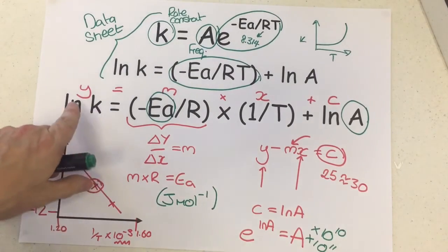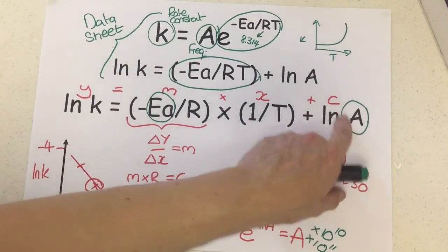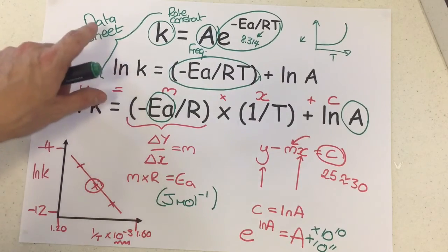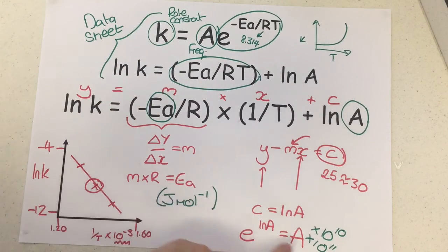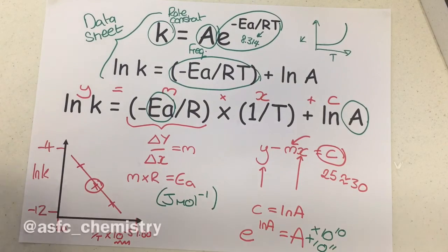Hopefully that shows you what you can do from this slightly adjusted version of the Arrhenius equation that you're going to get in the exam on the datasheet to calculate the activation energy and the pre-exponential factor A. These are all skills you need to be able to do before going into your physical chemistry exam. I'll leave you to the rest of the A Level chemistry playlist then, and until next time, happy revising.